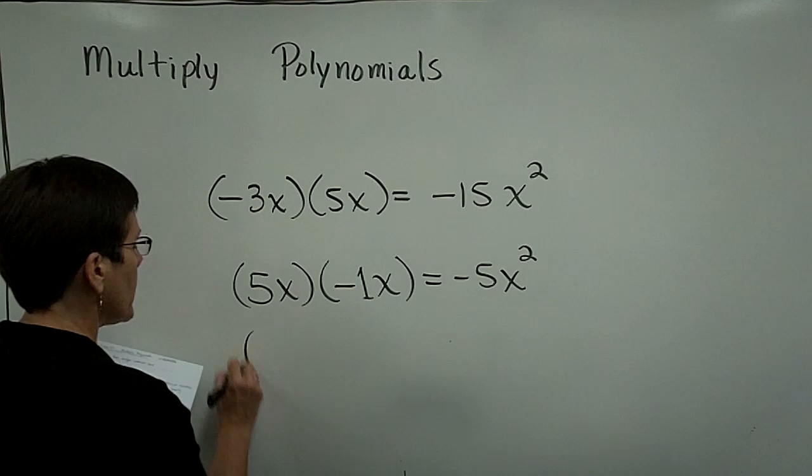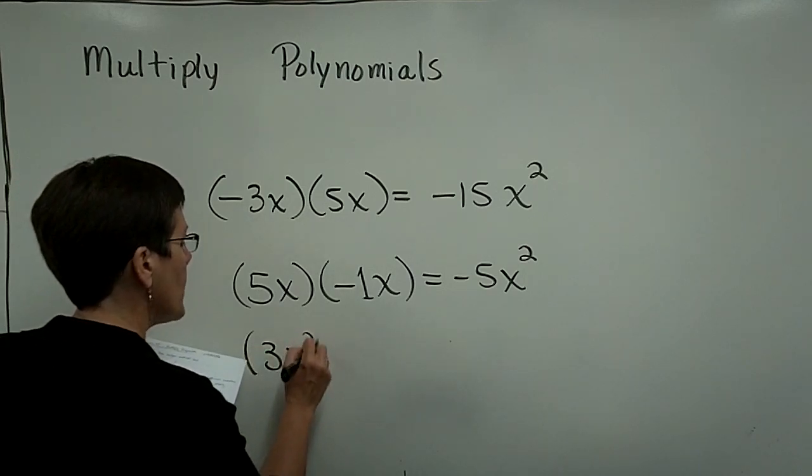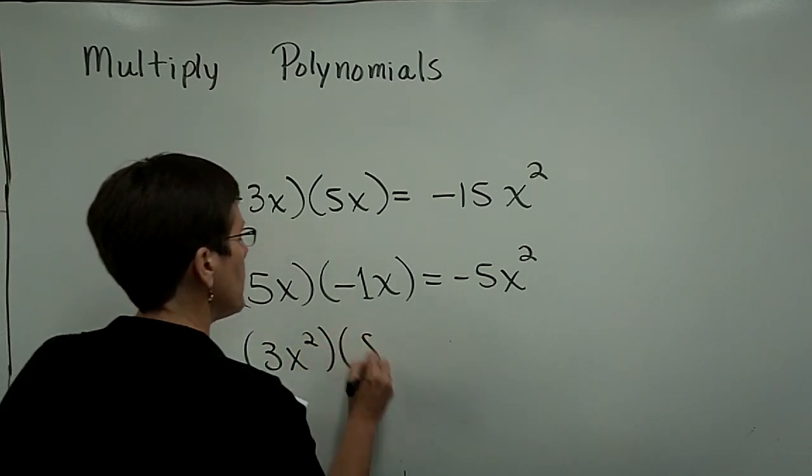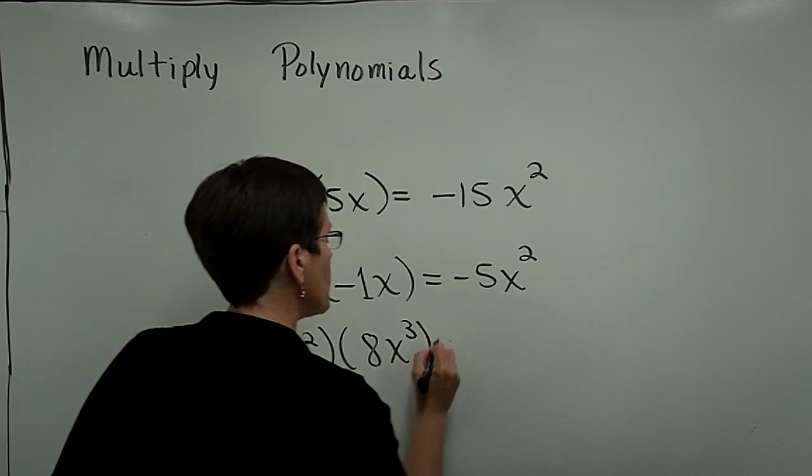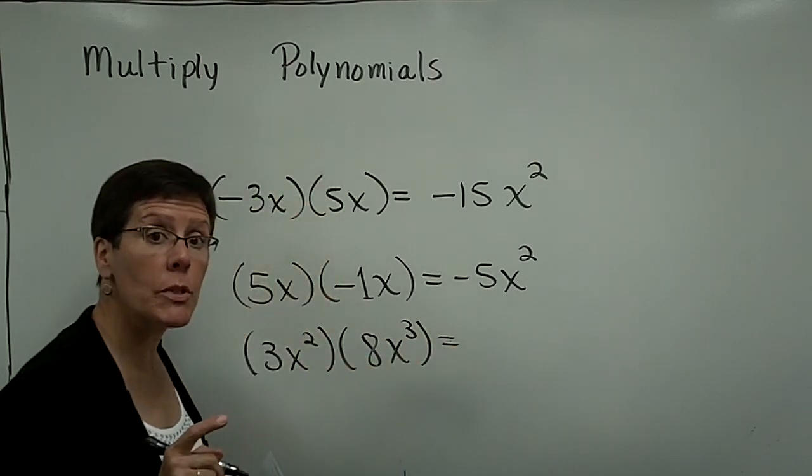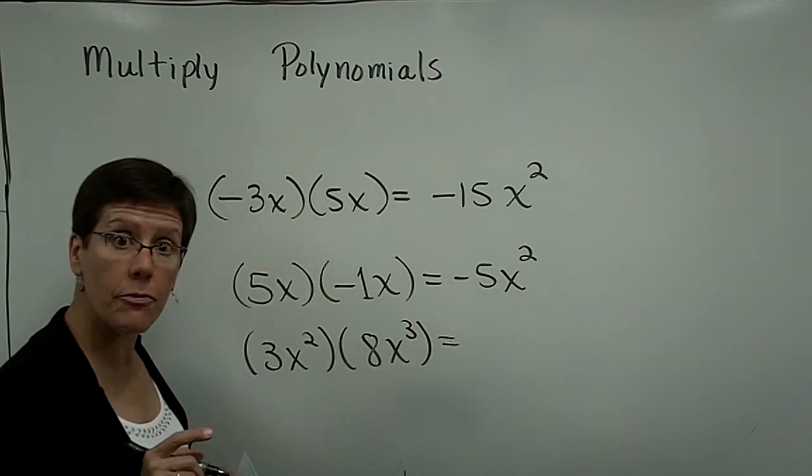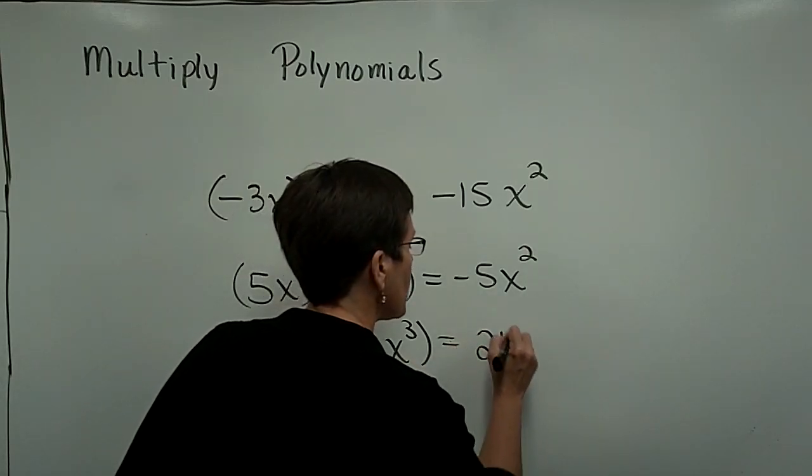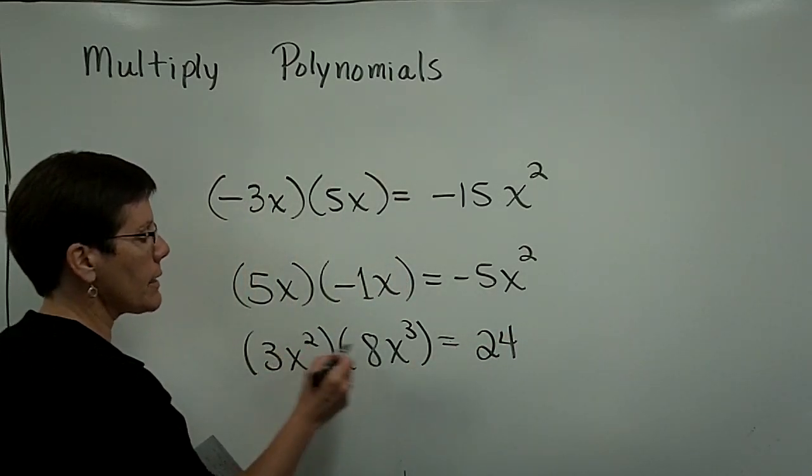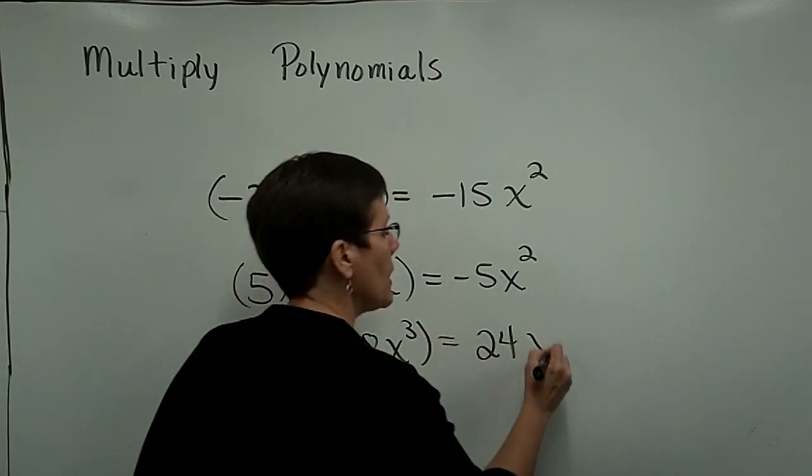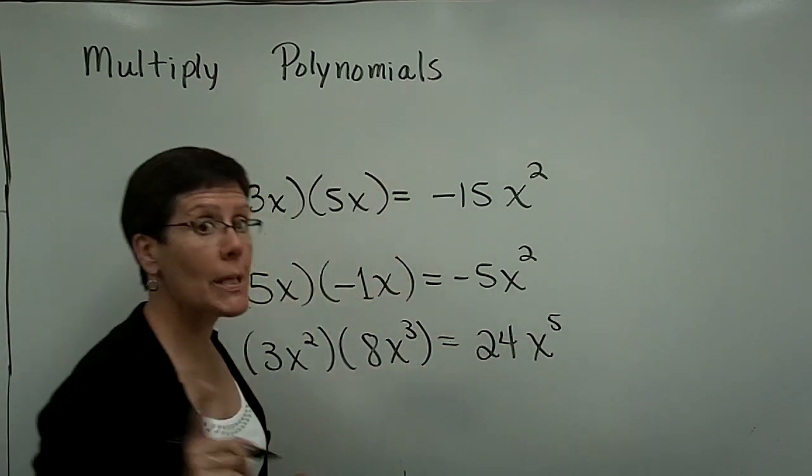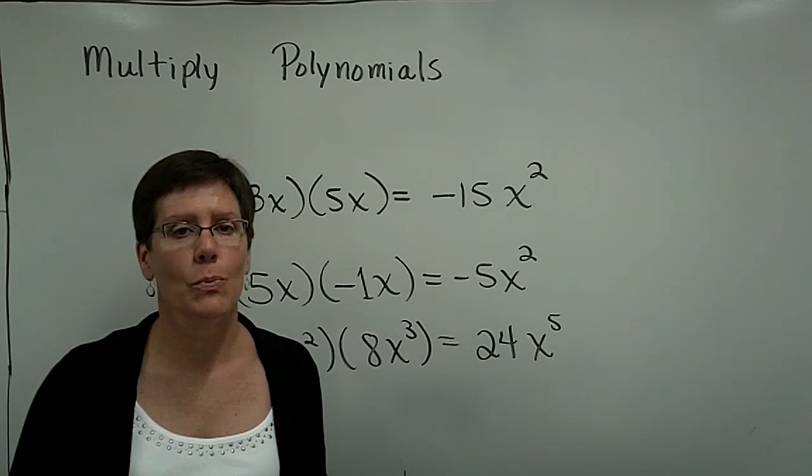Let's do one last one in terms of a monomial times a monomial. So if I have 3x squared times 8x cubed, the coefficients of those two monomials multiply together to be 24. 3 times 8 is 24. x to the second times x to the third is x to the fifth, because I add those exponents when I multiply.